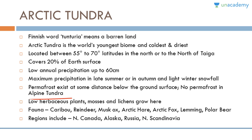In arctic tundra, low herbaceous plants, mosses, and lichens grow. Animals such as caribou, reindeer, musk ox, arctic hare, arctic fox, lemming, and polar bear exist in this biome. The arctic tundra region includes northern Canada, Alaska, Russia, and northern Scandinavia.